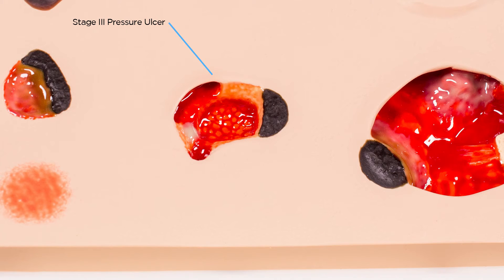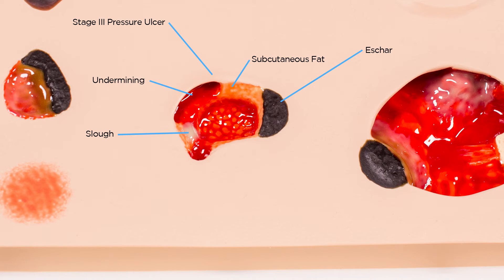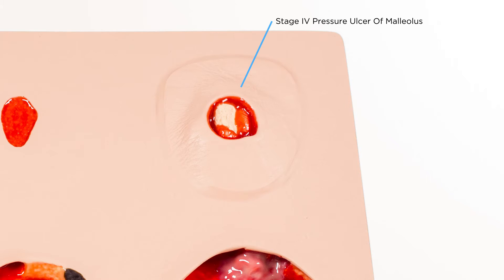Followed by a stage 3 displaying eschar, subcutaneous fat, slough, undermining, tunneling and granulation tissue, followed by a shallow stage 4 representative of over the malleolus with bone and tendon visible.